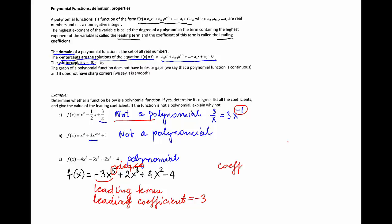The coefficients, in order of decreasing powers of x, are -3 for x^5, 0 for x^4, 2 for x^3, 4 for x^2, 0 for x to the first power, and -4.